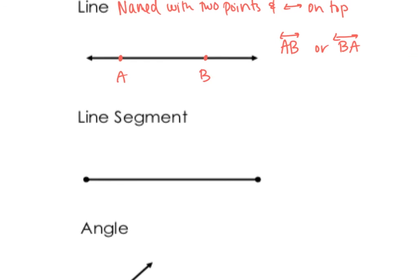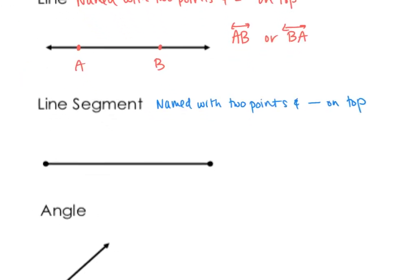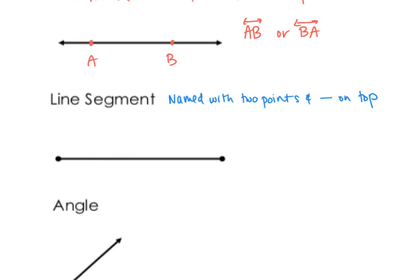The next one is a line segment. A line segment differs from a line because a line segment starts and ends. We name it pretty much the same way — with two points — but instead of a line symbol on top, it's a line segment symbol on top, without the arrows. So if this is my line segment with endpoints X and Y, we would refer to it as XY or YX with a line segment symbol on top.